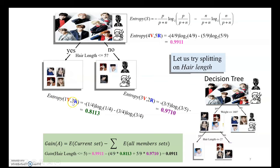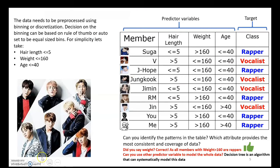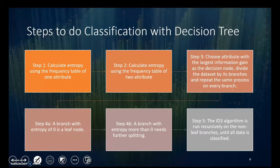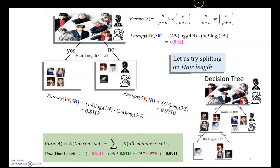It is observed that there are four people who have hair length less than or equal to 5, and one of them is a vocalist and three are rappers. Using the highlighter to identify people with hair length equal to 5 — we can see there are three rappers and one vocalist. We replace the values based on this formula and follow through.